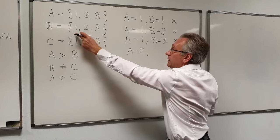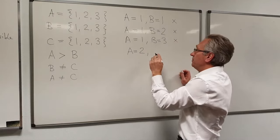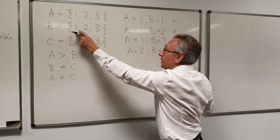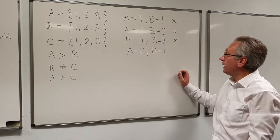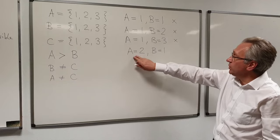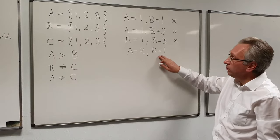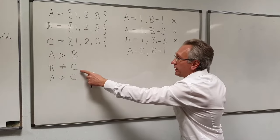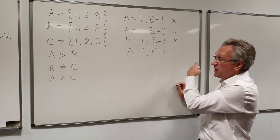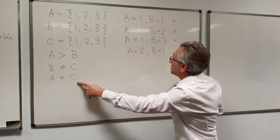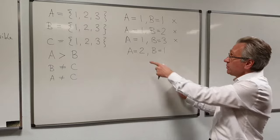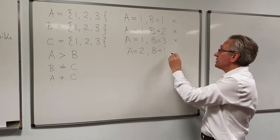So we now move on to B and try the values one at a time. Notice that we go back to B equals 1 because we've got a new value for A. So A equals 2, B equals 1. Well, A is greater than B, that's okay. B is not equal to C, well we don't know what C is, so that's okay. A is not equal to C, again we don't know what C is, so that's okay. So we're happy with this and we can now move on to C.